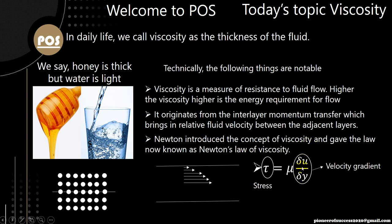And the proportionality constant is viscosity here. Now if you have different fluids, this velocity gradient will be different. In normal language, the nature as I have shown here could be different for a different liquid. If this nature of diminishing is different, then you will get a different velocity gradient and hence a different viscosity.